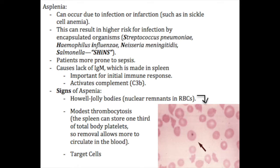Another important thing to realize about the spleen is that once patients have had it removed, there are several telltale signs. One is thrombocytosis — a very large platelet count. This is because the functioning spleen normally removes a number of platelets from the bloodstream, so without it you get a bump in the platelet count.